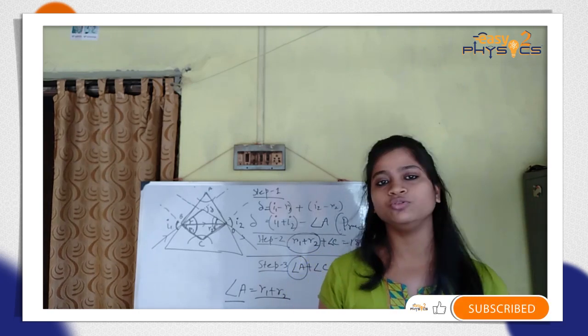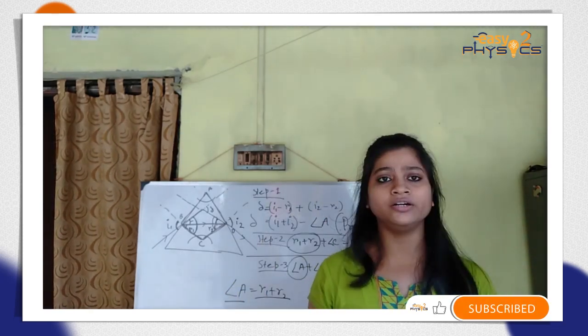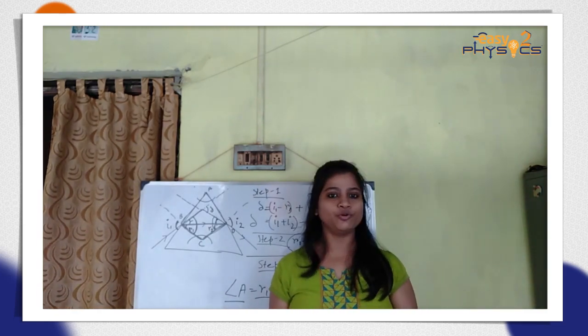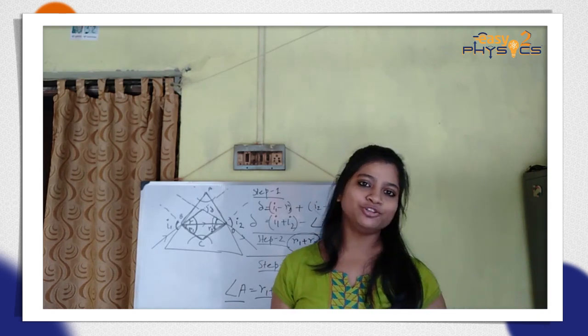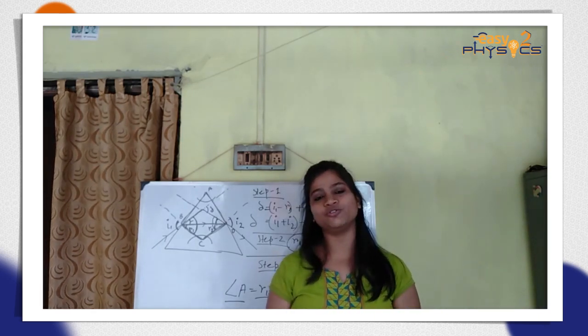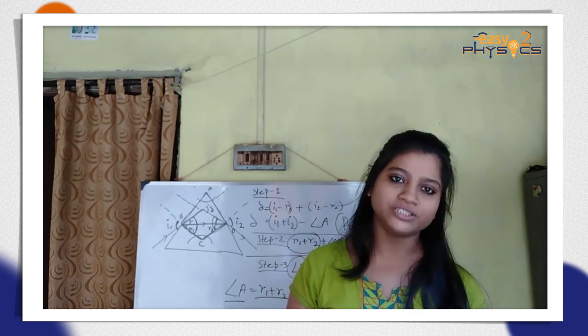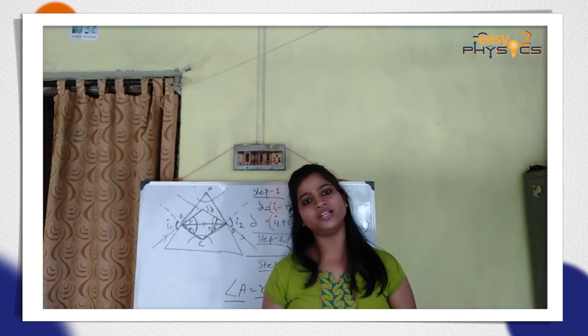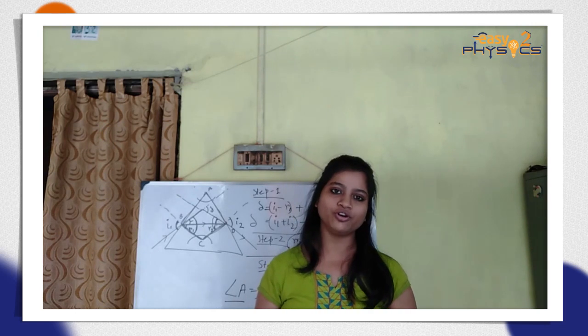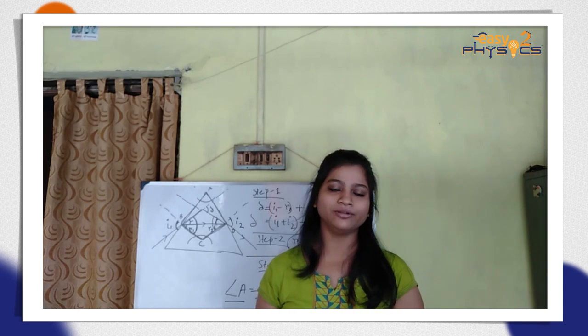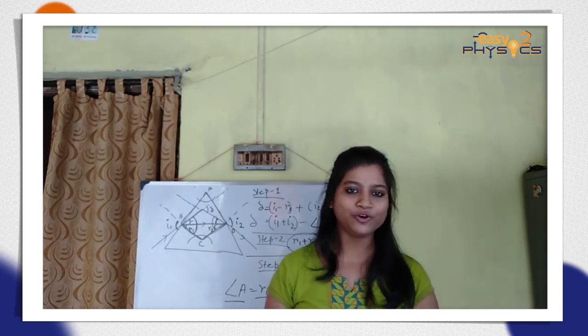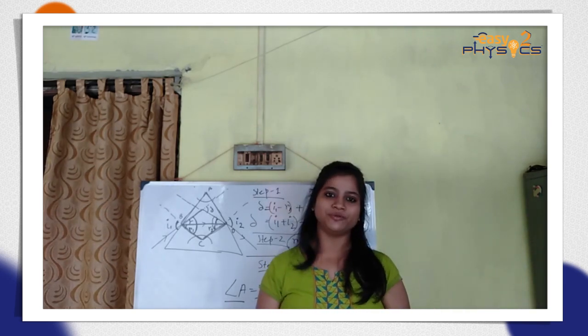I will practice in one day and then I will practice for one more day. The main derivation is that delta equals i1 plus i2 minus A. In the next video, you will know how to explain this further. If you have any questions or queries, please comment on this video. I will definitely try to show you more. If you like the video, please like, share and subscribe. Thank you.